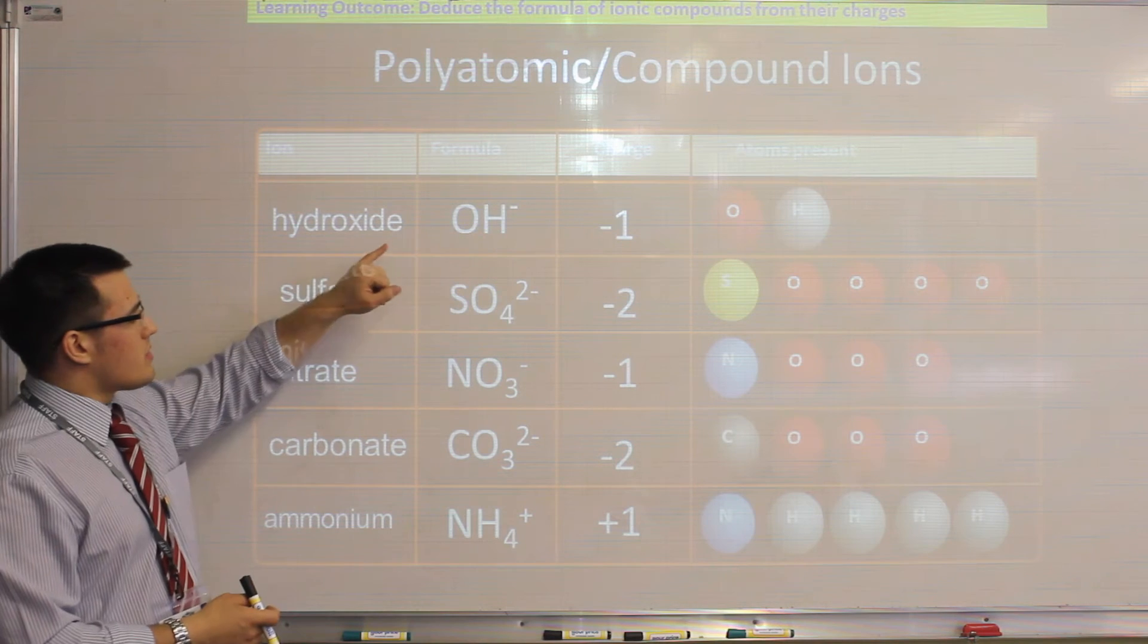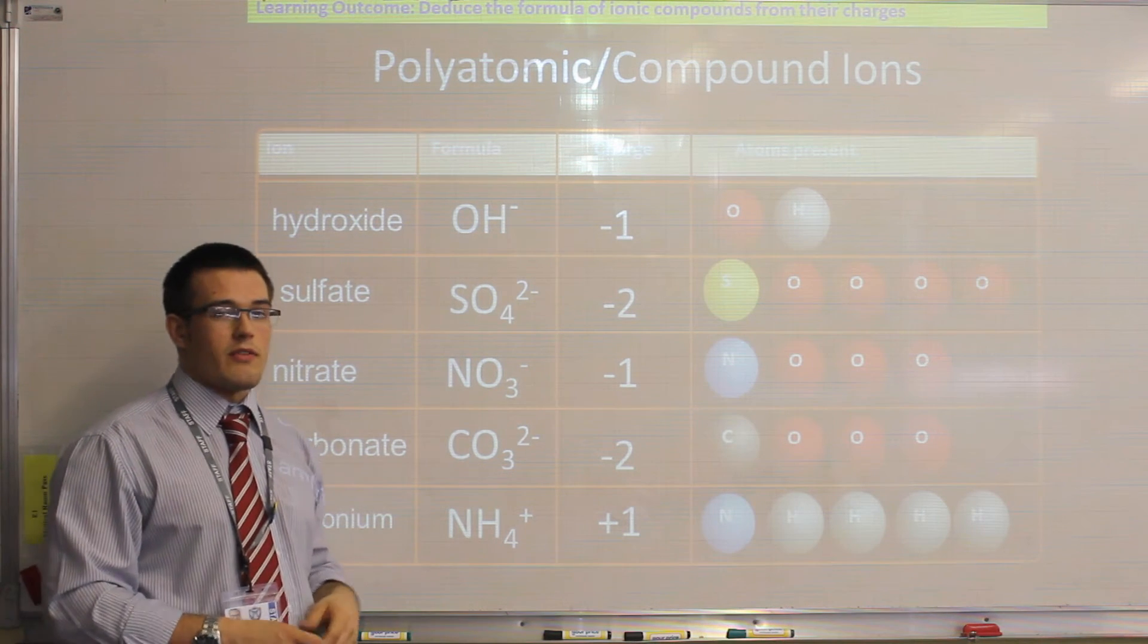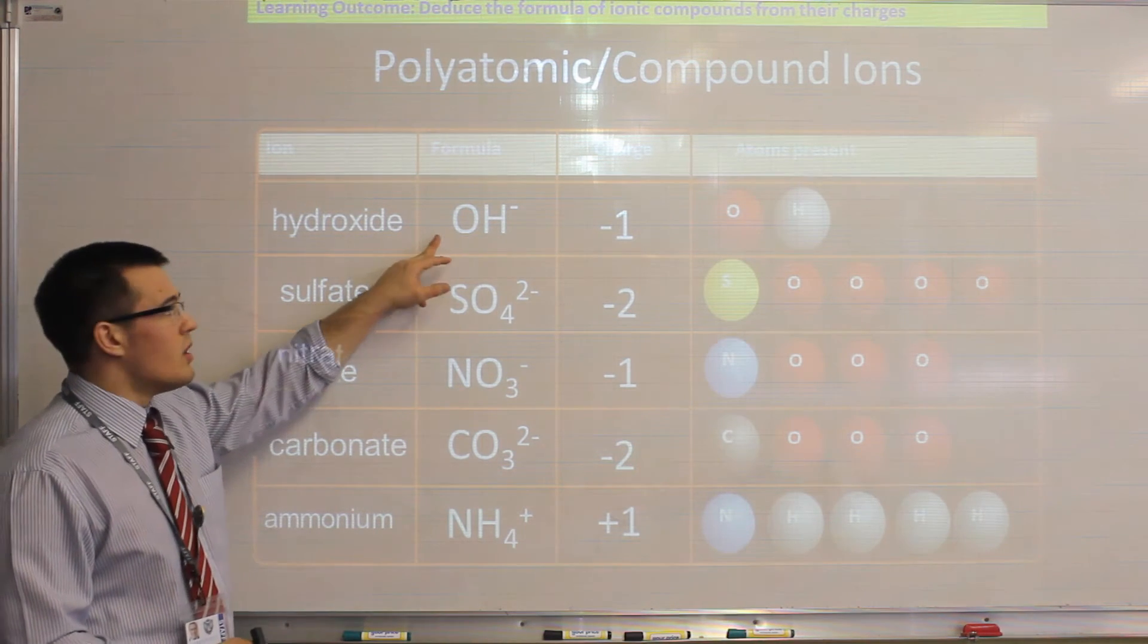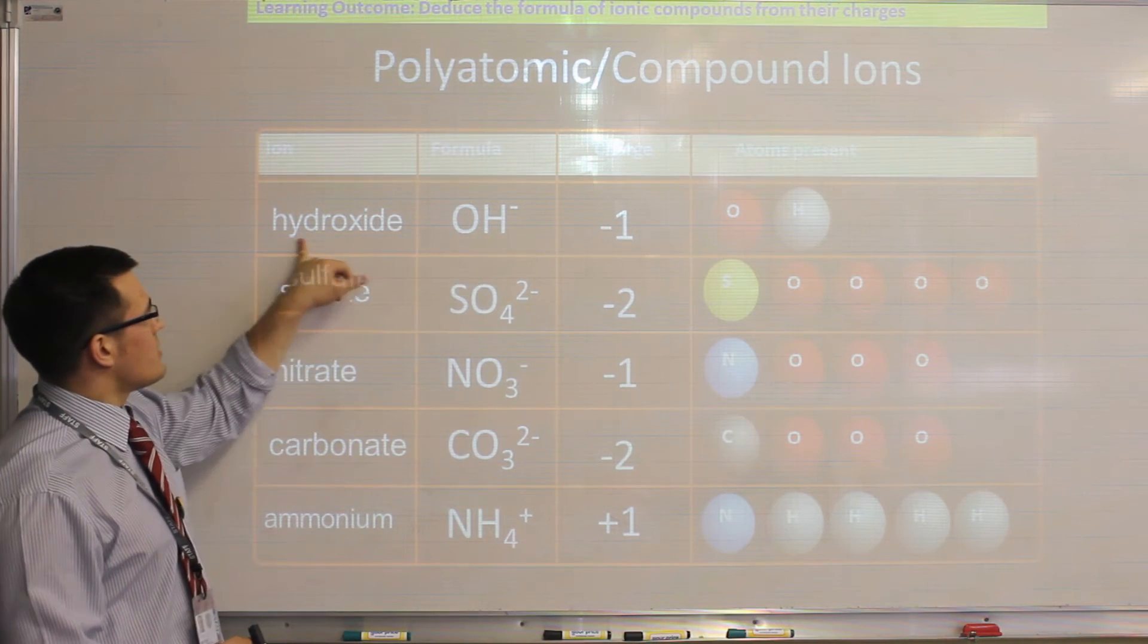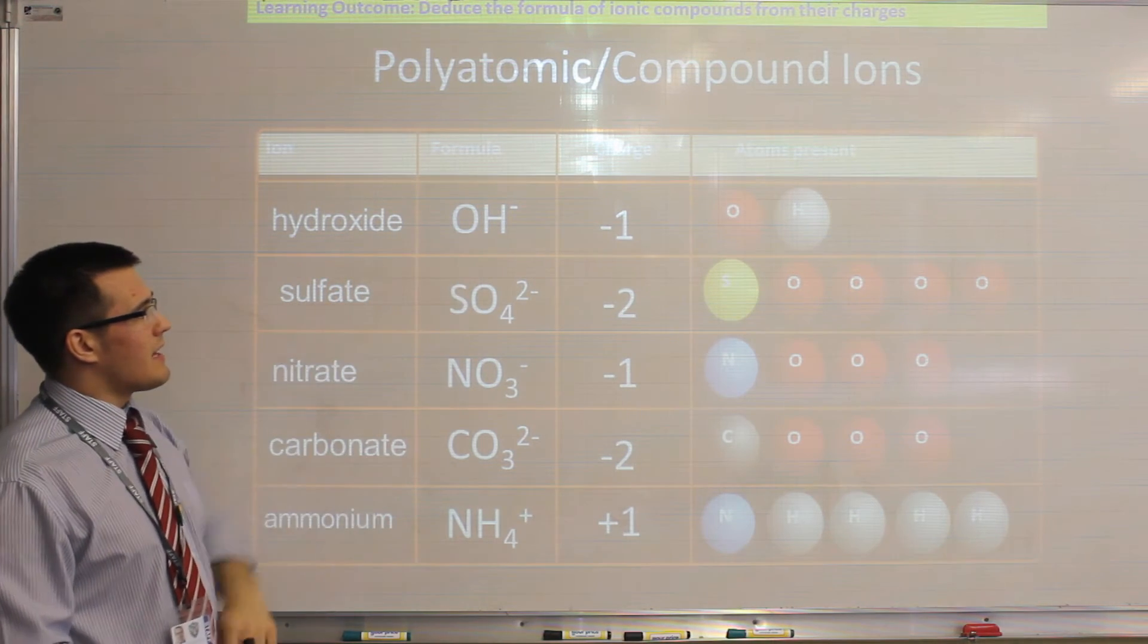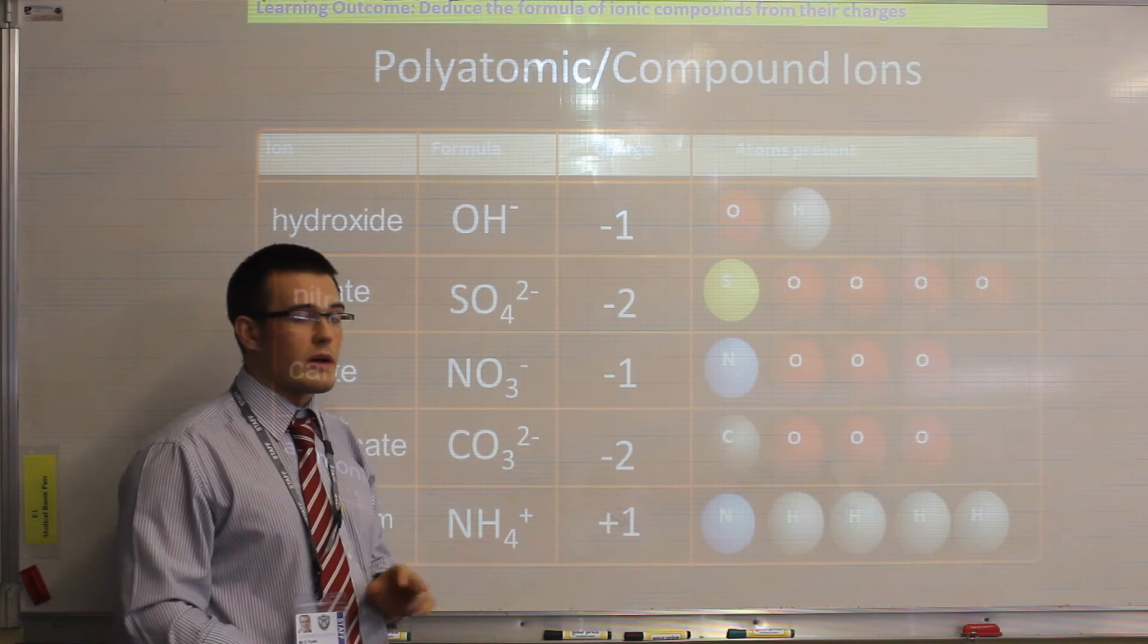So there are 5 examples that you need to be familiar with and remember. The first is the hydroxide ion, which is OH. So hydro for hydrogen, and oxide for oxygen. And that always has a minus 1 charge, always.